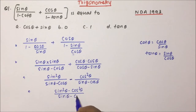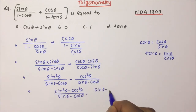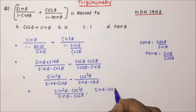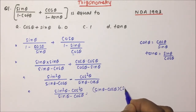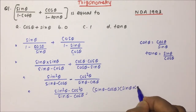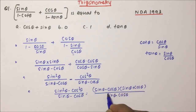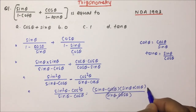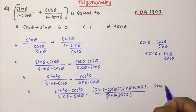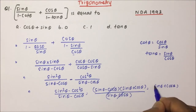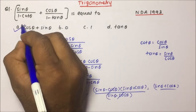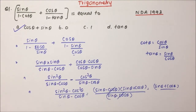Now, sin²θ − cos²θ factors as (sin θ − cos θ)(sin θ + cos θ) divided by (sin θ − cos θ). The (sin θ − cos θ) terms cancel, leaving sin θ + cos θ. So option A is the correct answer for question number 1.